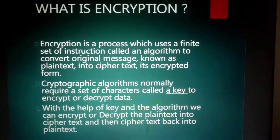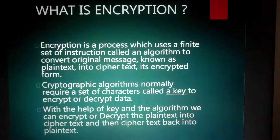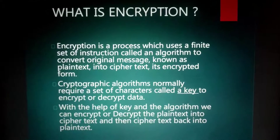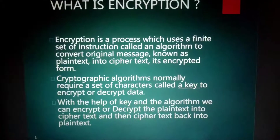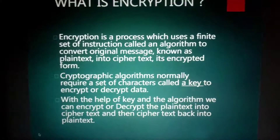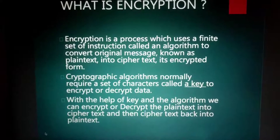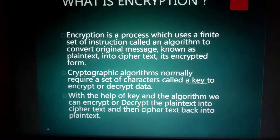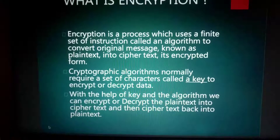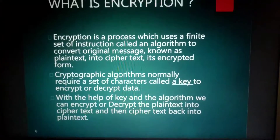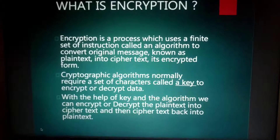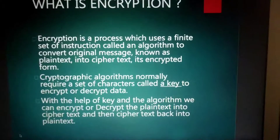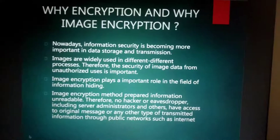Encryption is a process which uses a finite set of instructions called an algorithm, which converts the original message such as plain text into cipher text. A cryptographic algorithm normally requires a set of characters called a key to encrypt or decrypt. With the help of the key and algorithm, we can encrypt or decrypt plain text or cipher text.